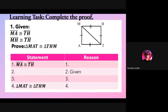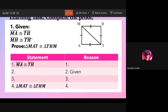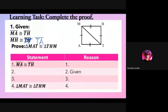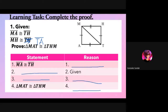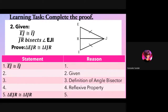Complete the proof. Learning task number one: given MA is congruent to TH, and MH is congruent to TA. Prove that triangle MAT is congruent to triangle THM. Items 1, 2, 3, and 4 are blank — find the missing statements and reasons. Please take a screenshot.